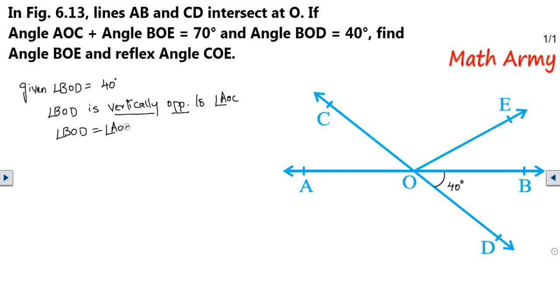So if BOD has already been given as 40 degrees and we know that vertically opposite angles are equal to each other, therefore angle AOC would be 40 degrees. Now guys, 70 degrees has been given as a combination of angle AOC plus angle BOE. So now, let us write another given in the question itself.